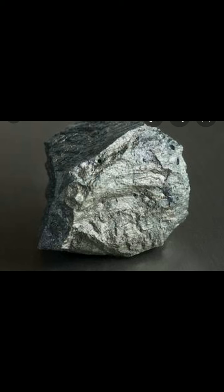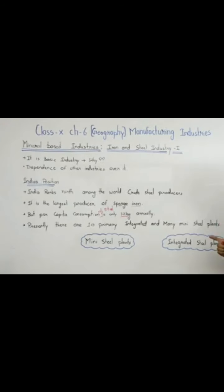The reasons India lags behind are: high costs and limited availability of coking coal — coking coal is a grade of coal used to produce good quality coke — lower productivity of labor, irregular supply of energy, and poor infrastructure.